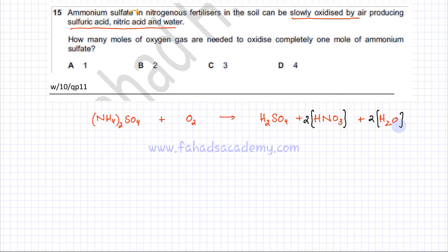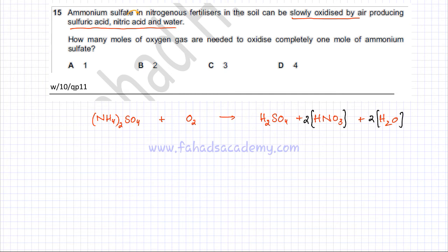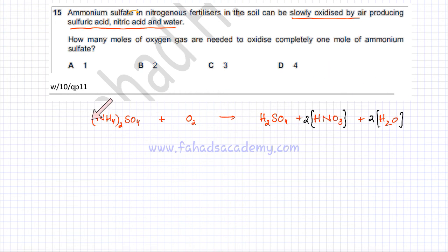Finally, balance oxygen last since it appears in the most places. On the right-hand side: H₂SO₄ has four oxygens, 2HNO₃ has six oxygens, and 2H₂O has two oxygens — totalling 12 oxygens. Ammonium sulfate already contributes four oxygens, so we need eight more from O₂ gas, which means four molecules of O₂. Therefore, option D is the correct answer.